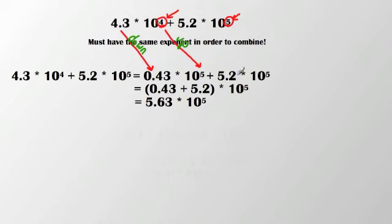And I didn't have to do anything else with that 5.2 times 10 to the 5th. Now what we see is that both values have the same power of 10, which means now I can go ahead and combine that 0.43 plus 5.2.